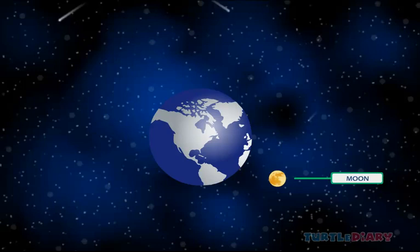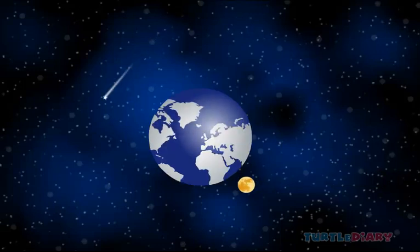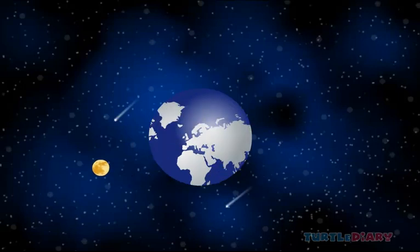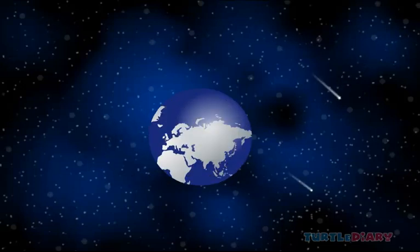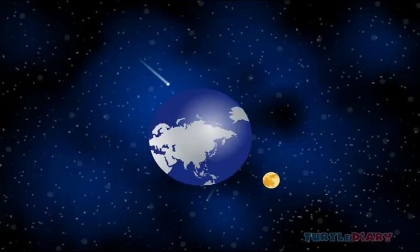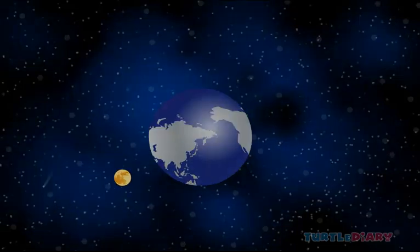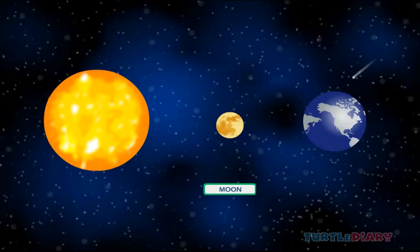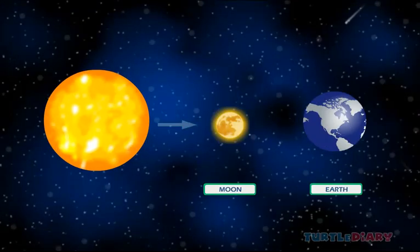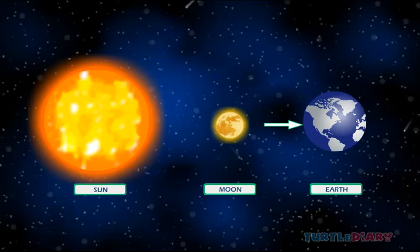There are many planets that have more than one moon. The moon revolves around the Earth as well as the sun. It takes 24 hours to revolve around the Earth. The moonlight we see from Earth is the light from the sun.